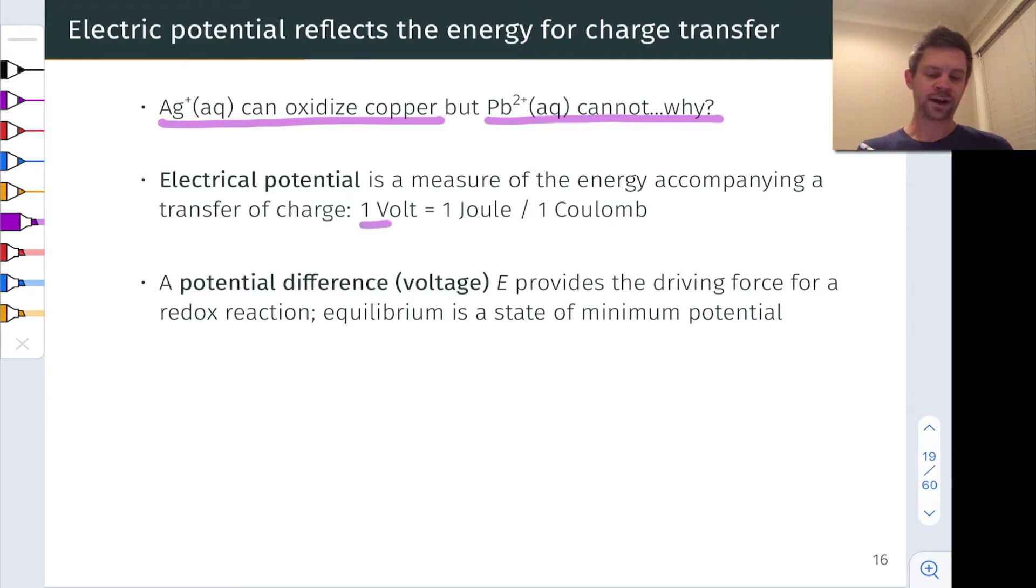So the volt is defined as one joule divided by one coulomb or one joule per coulomb. This means that we can think of voltage, which we'll often represent with the letter E, as an energy, and I'm going to represent this energy with the letter G for reasons that will become clear later, divided by a charge Q. This very simple looking equation is going to have profound implications a little bit later in this unit.